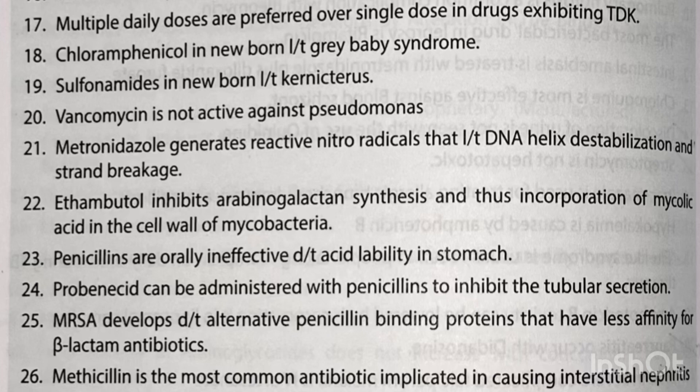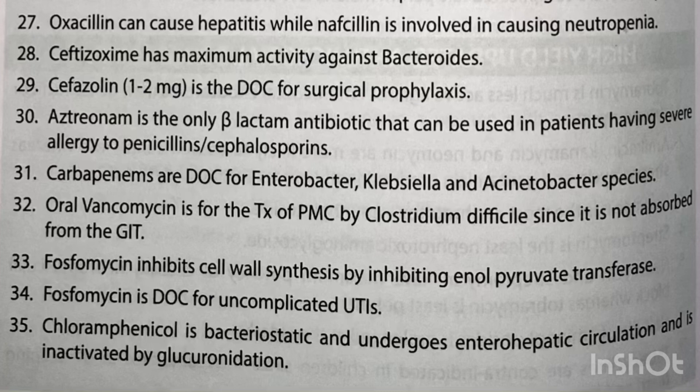Ethambutol inhibits arabinogalactan synthesis and thus incorporation of mycolic acid in the cell wall of mycobacteria. Penicillins are orally ineffective due to acid lability in the stomach. Probenecid can be administered with penicillins to inhibit tubular secretion. MRSA develops due to alternate penicillin-binding proteins that have less affinity for beta-lactam antibiotics. Methicillin is the most common antibiotic implicated in causing interstitial nephritis. Oxacillin can cause hepatitis while nafcillin is involved in causing neutropenia.